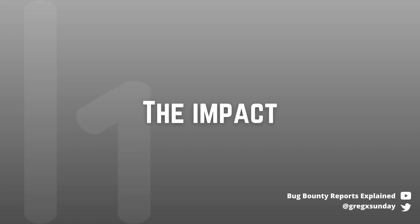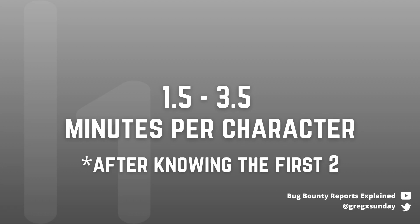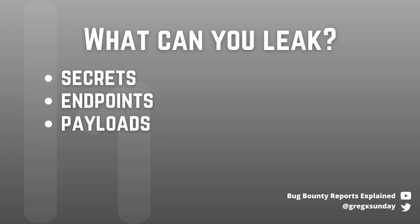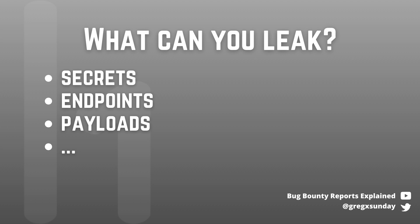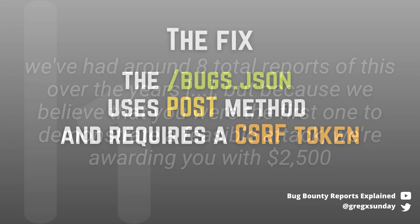Still, even this optimized technique requires a lot of requests. The reporter estimated about one and a half to three and a half minutes per character, assuming you know the first two. This way you could target, for example, authorization headers, specific endpoints, specific vulnerability classes, or whatever comes to mind. But whatever you chose, the attack would still probably take a few hours — so by no means is this a high-risk bug. HackerOne staff noted there were about eight reports about this behavior, and this was the first one that presented a feasible attack. Hence, this one was awarded $2,500. As for the fix, the bugs.json endpoint now uses the POST method and thus requires a CSRF token, making this attack impossible.